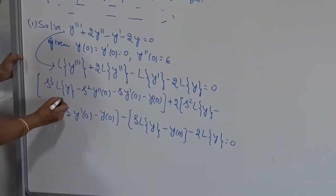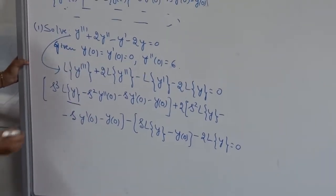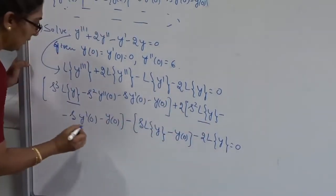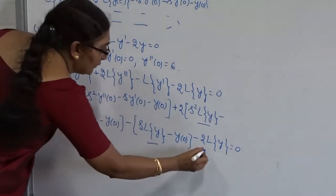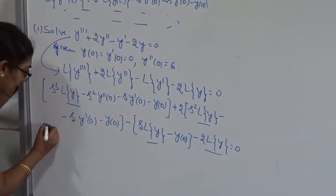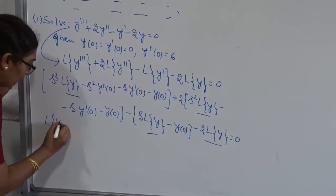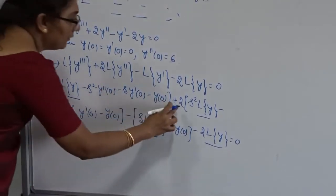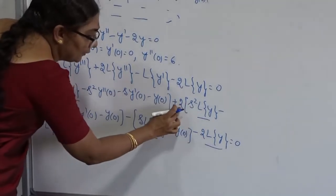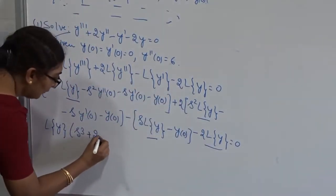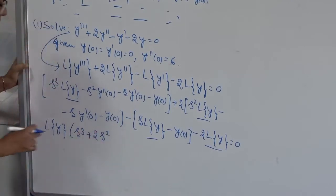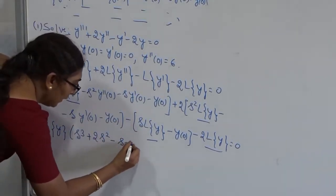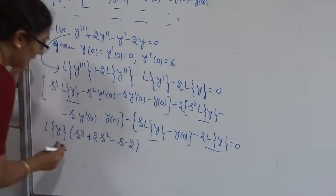Next, I am going to collect the terms on the right-hand side. Taking L{y} as the common factor, what remains? S cubed, plus 2S squared, then multiplied by minus 1, minus 1, minus 2 of L{y}.